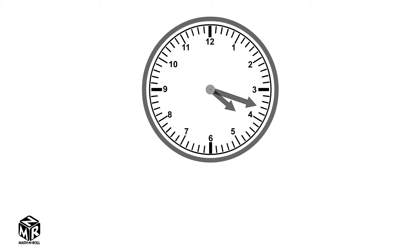A clock has two hands: the hour hand and the minute hand. The hour hand tells us the hour — it's the shorter hand. The minute hand tells us the minute — it's the longer hand.